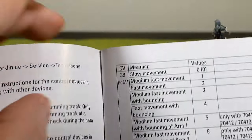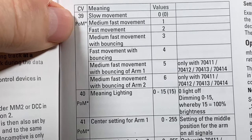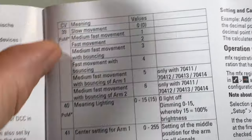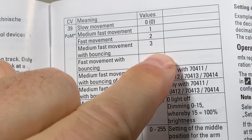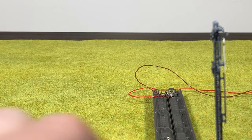From the previous video we remember this is CV39 we want to look at and I want to put it to the value three. All right, lots of things to remember.